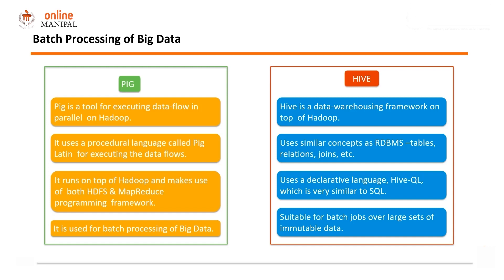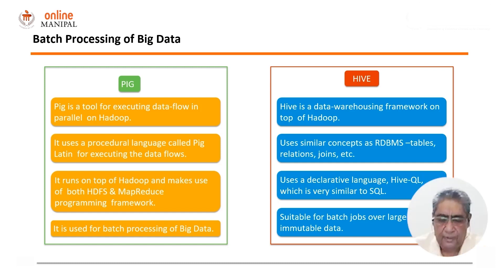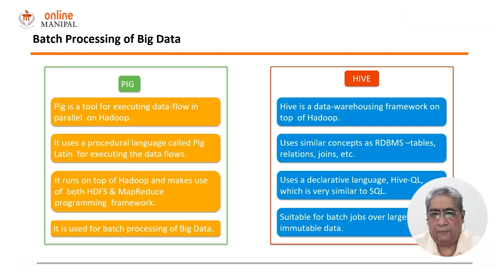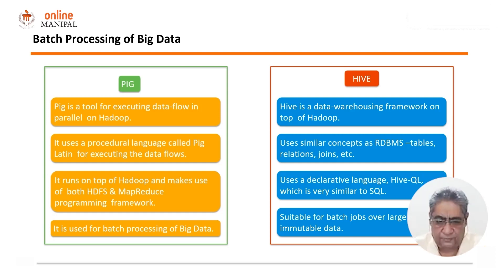With PIG it is slightly different — PIG Latin is a completely different kind of language, so the learning curve for analyzing data in batch using PIG is slightly higher. But both of them have their own place in the batch processing of big data. Both PIG and Hive were used in the Aadhaar project for batch processing. There was data from the enrollment process and data from the authentication process, and analyzing data from both these processes required use of PIG and Hive.